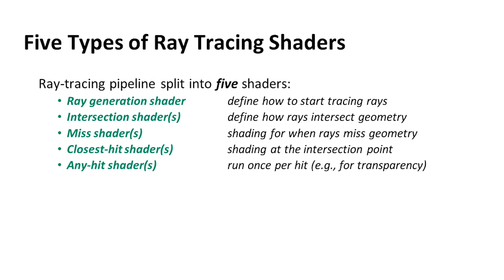In DirectX for ray tracing and in Vulkan for ray tracing, there are five new kinds of shaders that are added. There's a ray generation shader, and what that does is it's kind of the manager — it basically starts the ray going and keeps track of it and gets its final result. There are intersection shaders, so if you wanted to intersect a sphere, you'd have an intersection shader for that, or a subdivision surface, or whatever you want. There's a different kind of shader for each one.